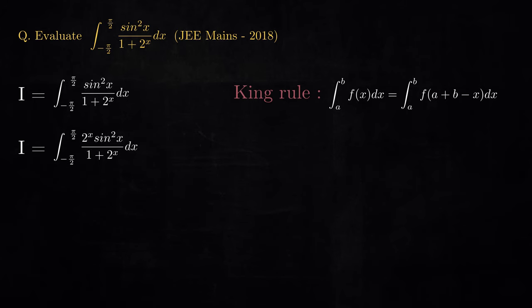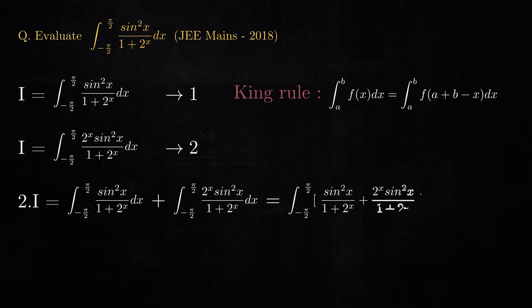Now, it might look like we have complicated things even more, because we have introduced an extra factor of 2 power x in the numerator. But look at what happens when we add equations 1 and 2. Because the limits for both the integrals are exactly the same, we can club both the integrals into a single integral, and surprisingly, it eliminates a lot of mess.